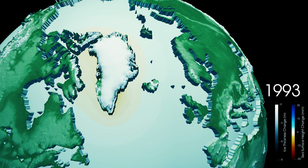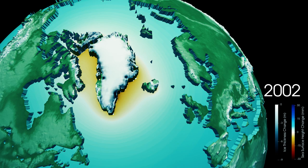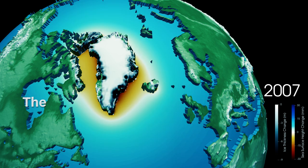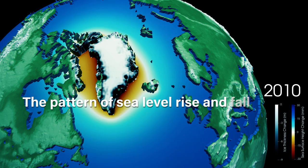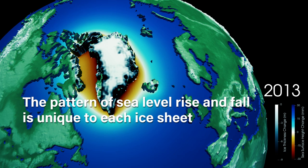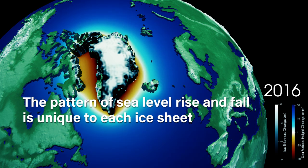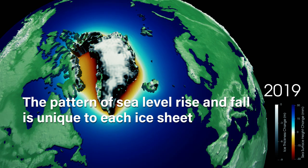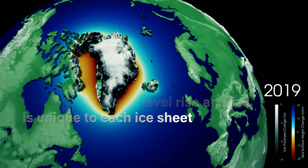The results show that we're actually detecting a sea level fingerprint within the observational data. The pattern of sea level rise and fall generated by these processes is unique to each ice sheet, and that's why we call it a sea level fingerprint.